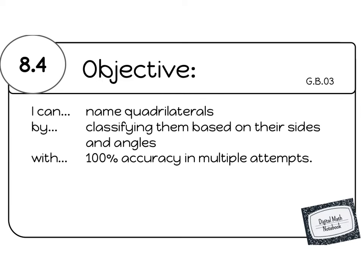Today's objective is I can name quadrilaterals by classifying them based on their sides and angles with 100% accuracy in multiple attempts. Please pause to write the I can and by statement in your digital math notebook now.